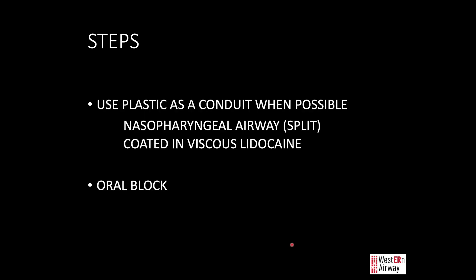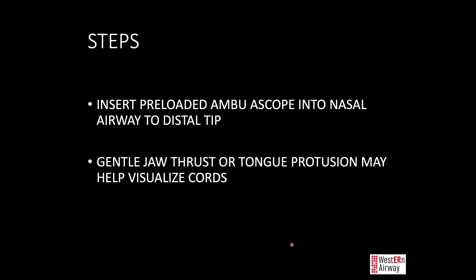If you're using a fiber optic scope, we highly suggest using some sort of plastic as a conduit. A nasopharyngeal airway split down the middle provides a clean, clear plastic conduit to direct your fiber optic scope toward the cords. You can coat the outside of that NP airway in lidocaine to make it more comfortable. Splitting it down the middle makes it easier to peel off and pass your endotracheal tube afterward. If using an oral technique with direct or video laryngoscope, an oral block to give more mouth opening may also make it easier.